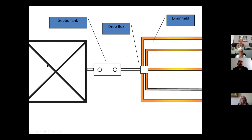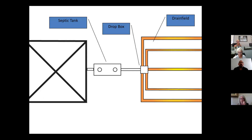From the septic tank, we go to a distribution box. This system has five runs — generally you'll see three to four, depending on the size of the house and number of bathrooms. Each line is approximately 60 to 66 feet in length, and the pipe itself is a four-inch black drainage pipe with small slits for water to drain out. The slits are small so bugs, sand, and dirt don't wash in, but they can plug up if the system isn't running properly. The drainage field is the most important part.